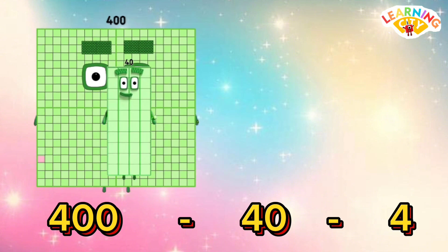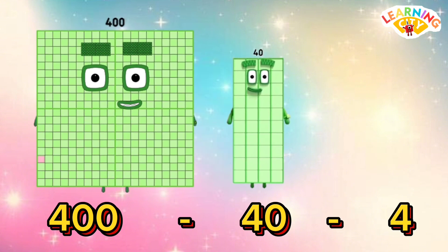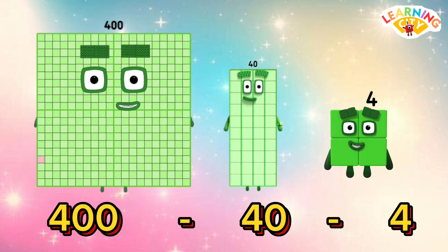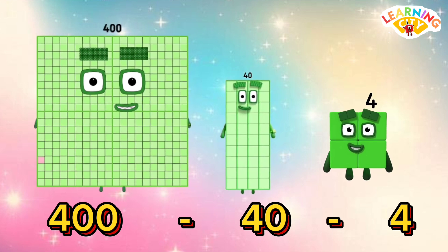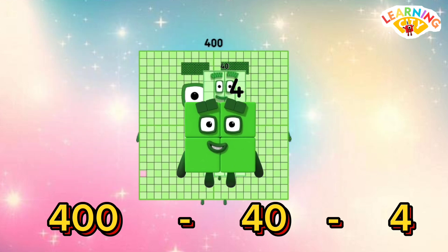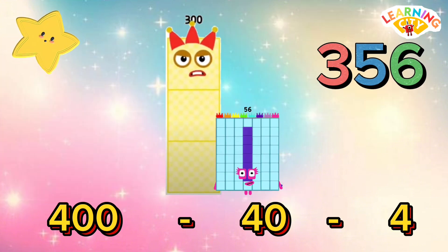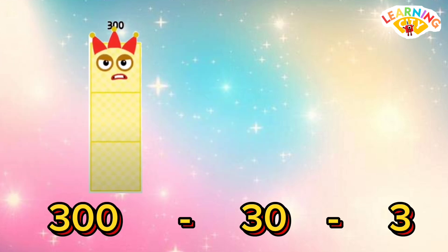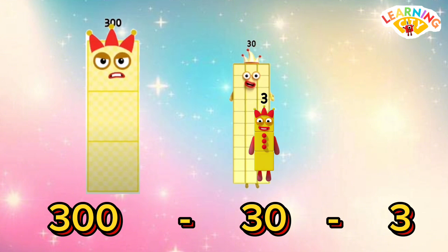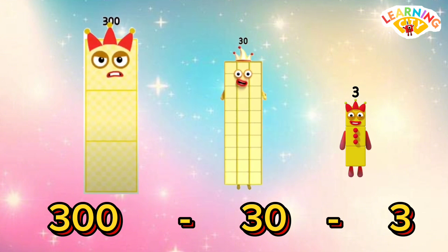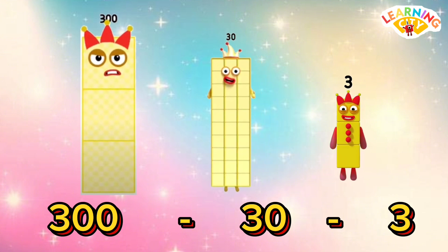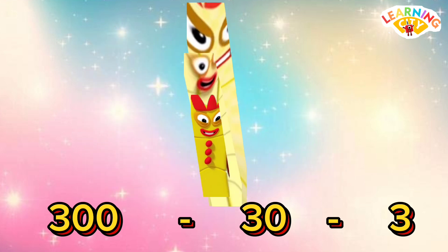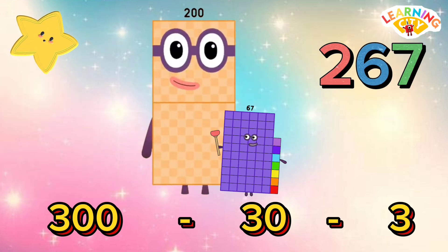400 minus 40 minus 4 is equals to 356. 300 minus 30 minus 3 is equals to 267.